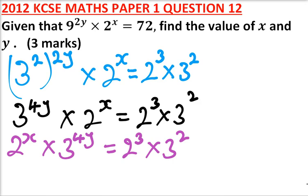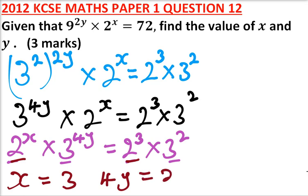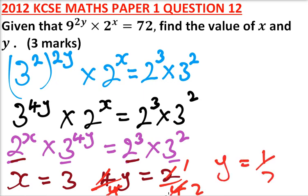Now, since we are saying that the left hand side and the right hand side are equal, and here we have 2, here we have 3, here we have 3, so we can equate the index. So we say x is equal to 3. And for 4y, we have 4 divided by 4 equals 2 divided by 4. This is 1, this is 2, so it means y is equal to a half. So that is how you work it out.